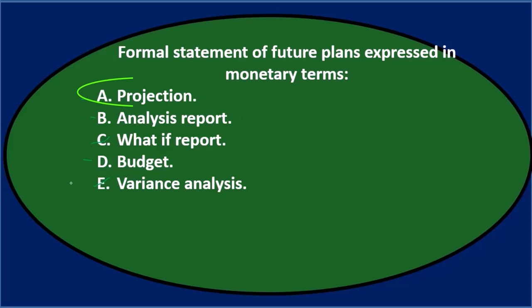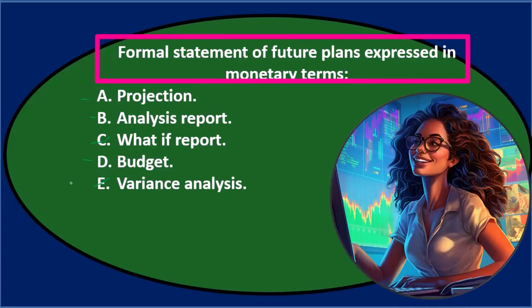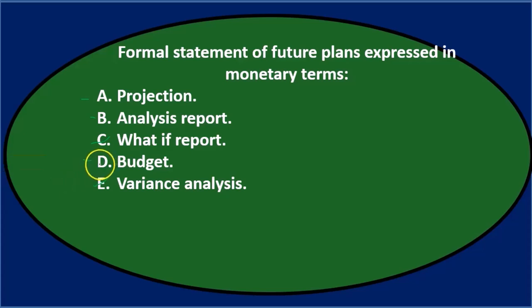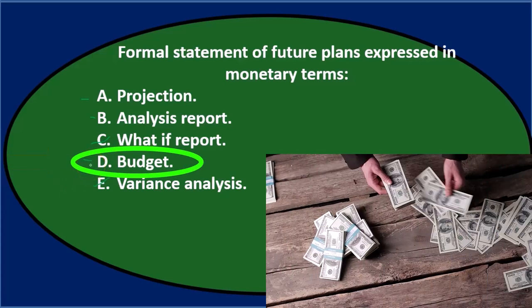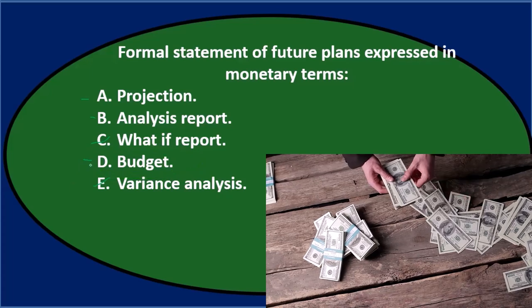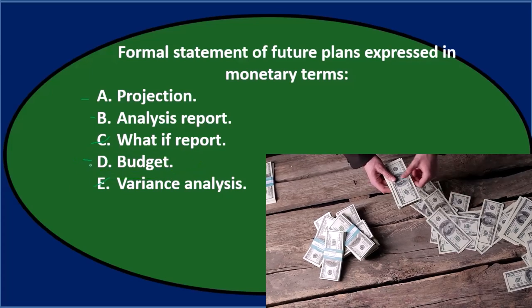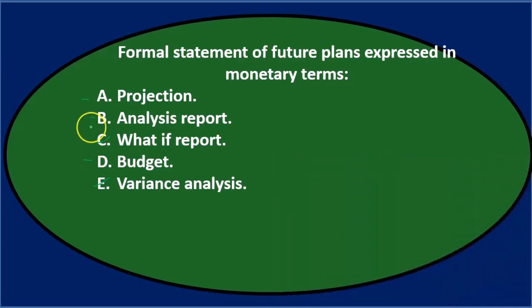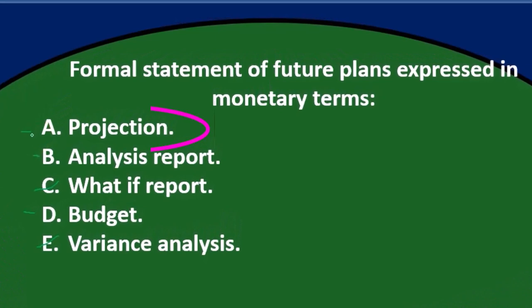Let's go through this again. Formal statement of future plans expressed in monetary terms is either A. Projection, B. Analysis report, or D. Budget. Of those three, we would think D is the answer considering we're in the budgetary area. Now, if you have a larger type of test and you're not focusing just on budgets, then it may be a little more difficult. Note also that if you see something like a projection, you might pick that and argue the case that possibly a projection is correct in some ways.